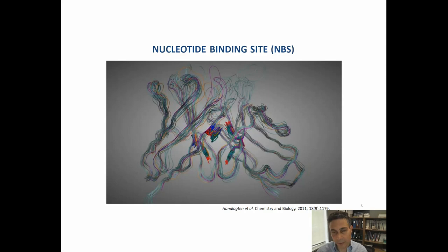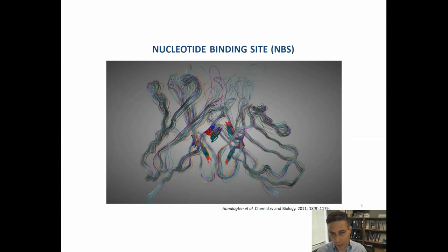The variable region is the hypervariable domain, which is made out of the six complementary determining region loops — three on the heavy chain, three on the light chain — shown in this crystal structure overlay where misaligned sequences indicate the antigen binding site. The rest of the sequences align well because those are framework regions; they're conserved, not variable.